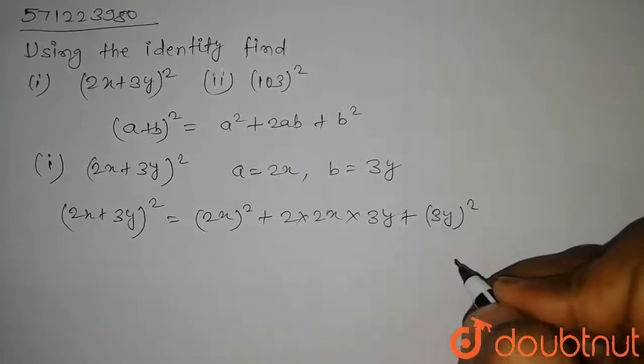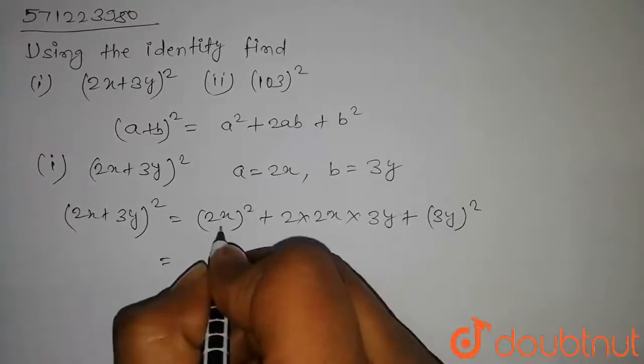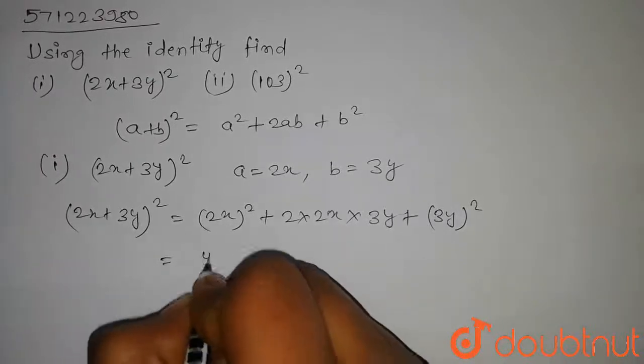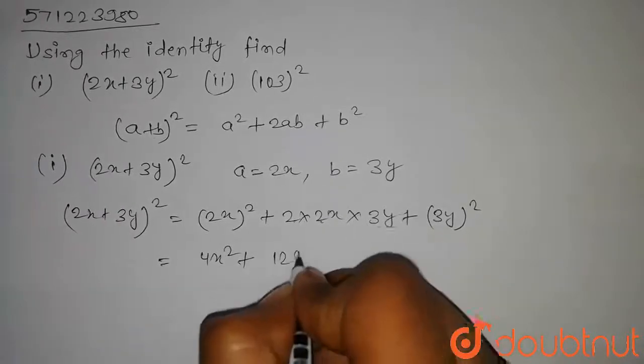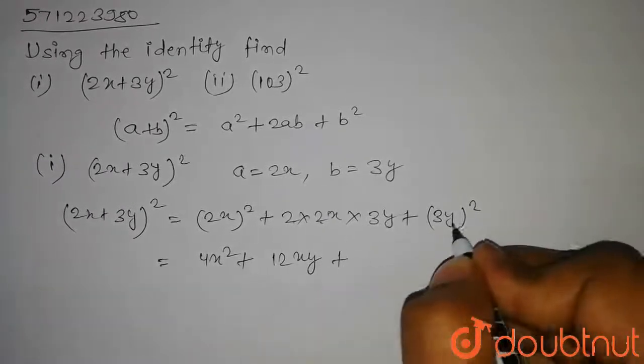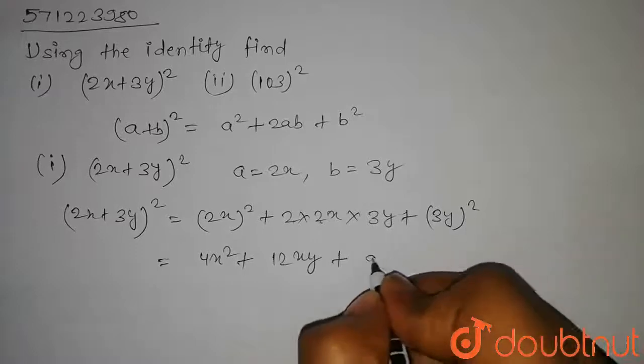It will be (3y)². Now, solving this we get (2x)² whole square will be 4x² plus 2 into 2x into 3y will be 12 into xy plus (3y)² whole square will be 9y².